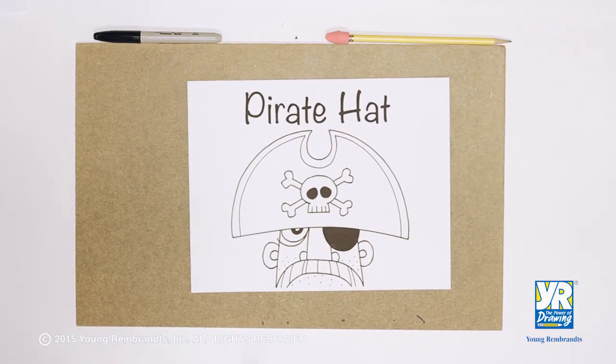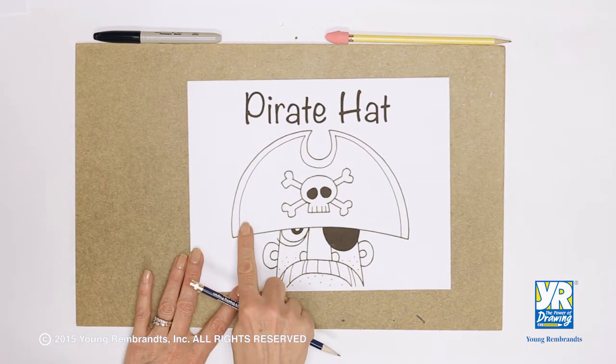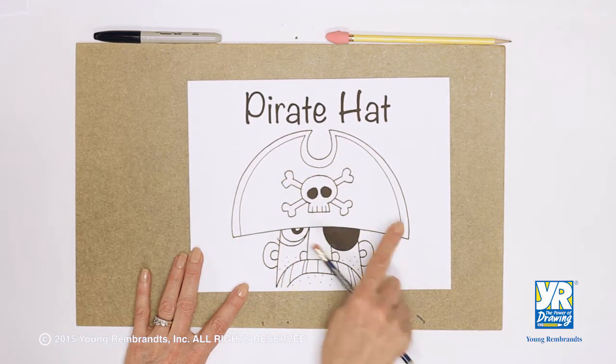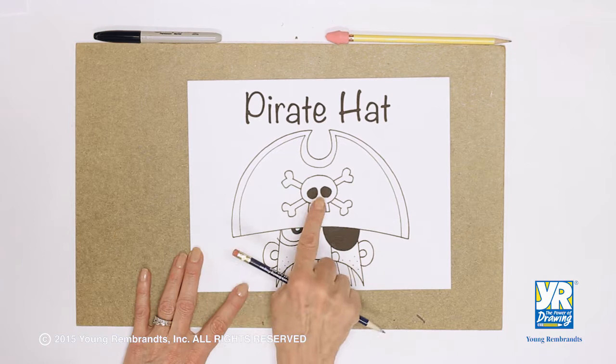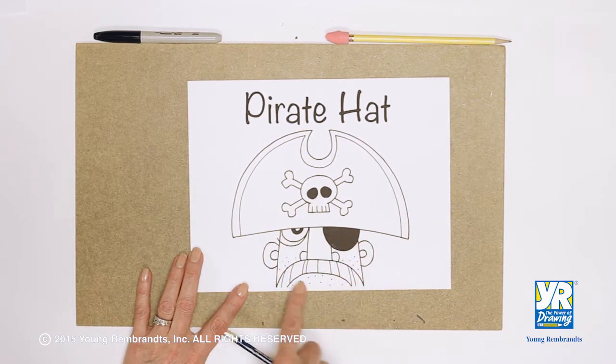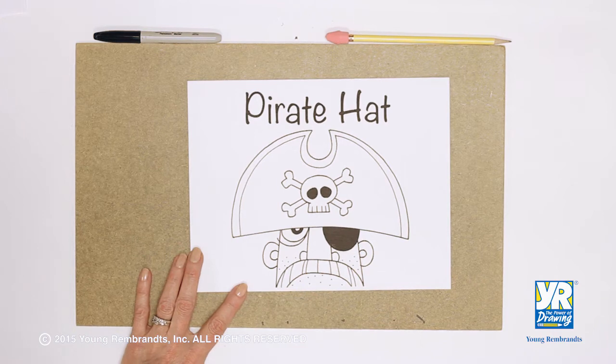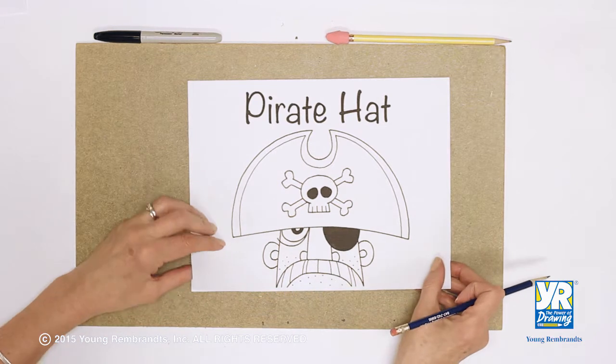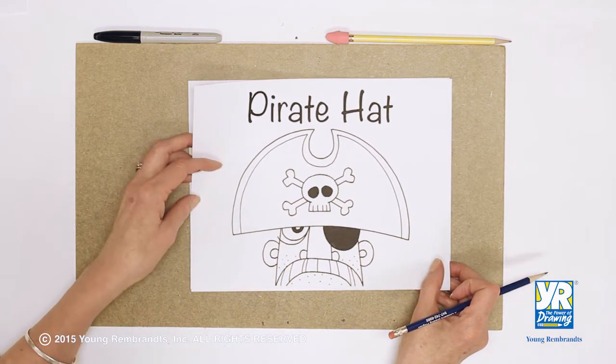Today we're going to draw a pirate hat. We have our big curved shape like a big rainbow with a cutout of our skull and crossbones, and a little bit of our pirate showing underneath his hat. One eye halfway covered with a patch on the side. Ready? Here we go.